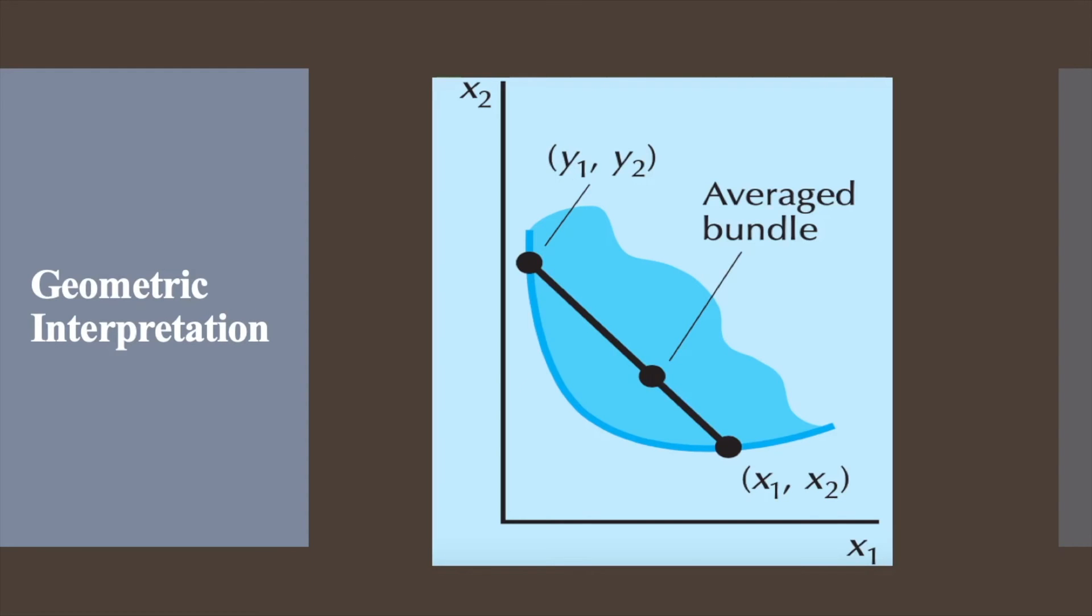Now we will see what this means geometrically. Have a look at this figure where (y1, y2) and (x1, x2) are indifferent bundles. Then, if averages are preferred to extremes, all of the weighted averages of (x1, x2) and (y1, y2) are weakly preferred to (x1, x2) and (y1, y2).